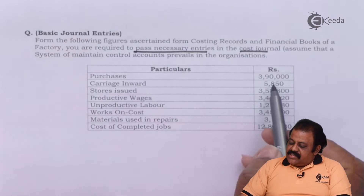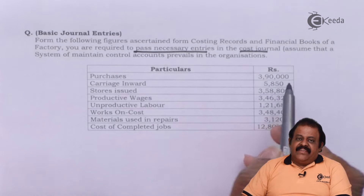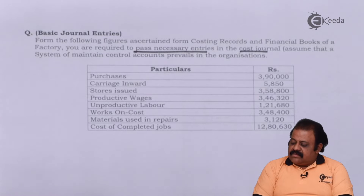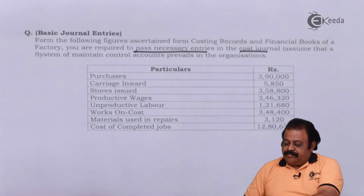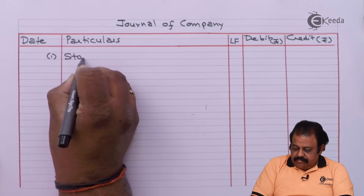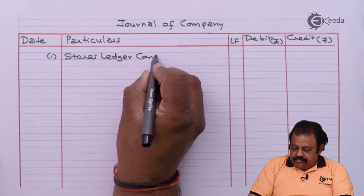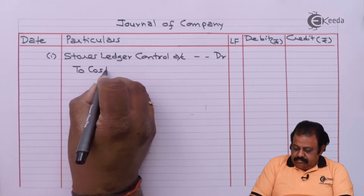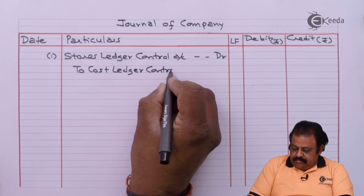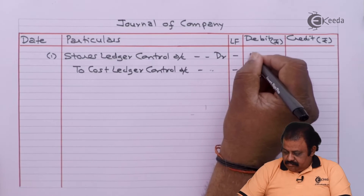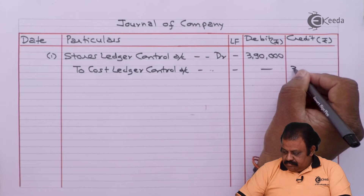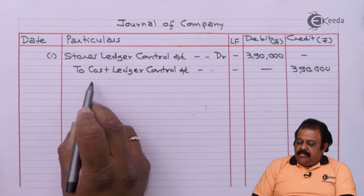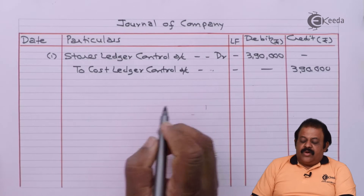First, they have given purchases 3,90,000 — this is the purchase of materials. The entry is: Stores Ledger Control Account debit to Cost Ledger Control Account, being purchases of materials recorded.